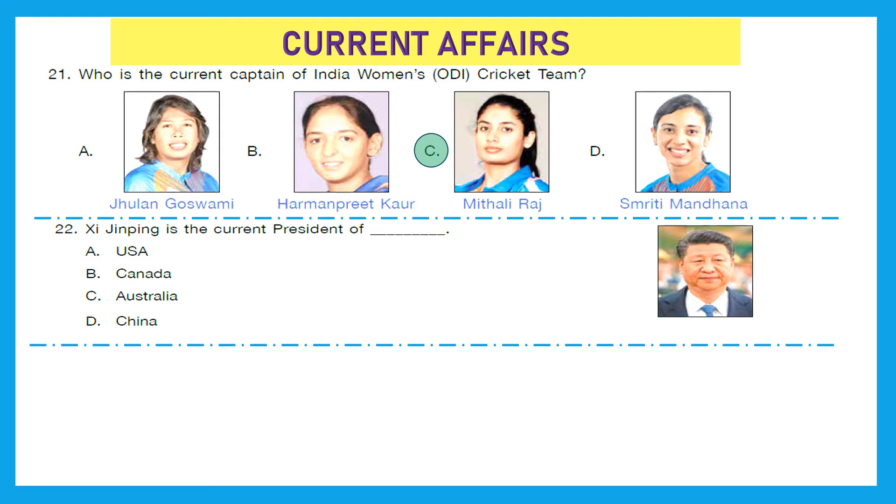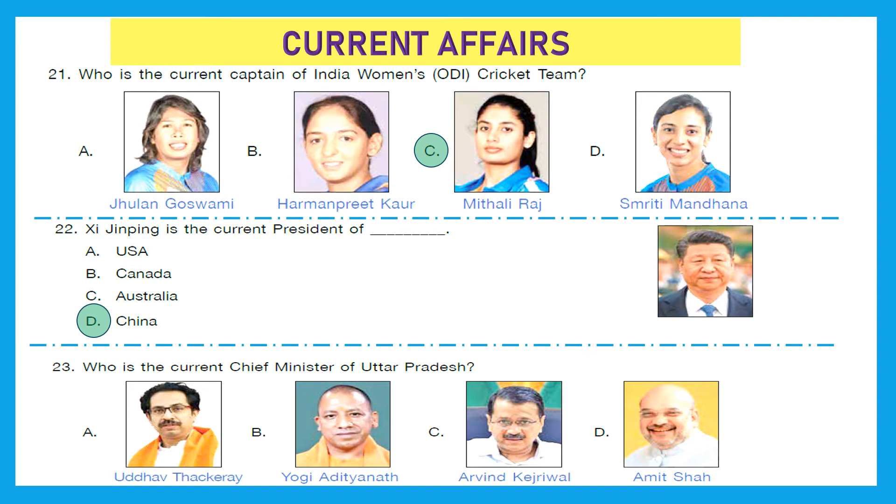Question 22: Xi Jinping is the current president of USA, Canada, Australia or China. The right answer is option D, China. Question 23: Who is the current chief minister of Uttar Pradesh? Is it Uttam Thakre, Yogi Adityanath, Arvind Kejriwal or Amit Shah? And the right answer is option B, Yogi Adityanath.